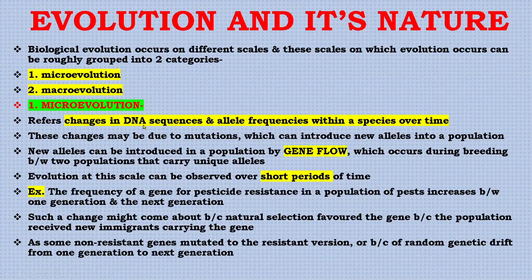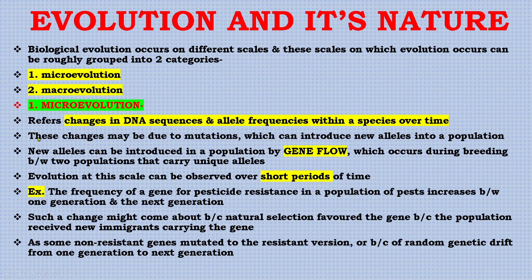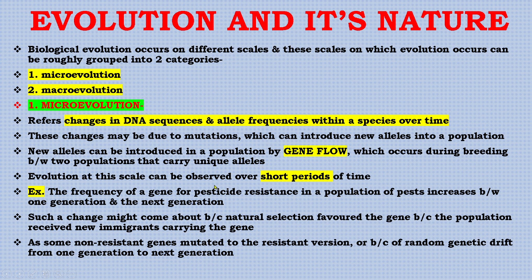Micro-evolution refers to changes in DNA sequences and allele frequencies within a species over time. These changes may be due to mutations, which can introduce new alleles into a population. New alleles can also be introduced by gene flow, which occurs during breeding between two populations that carry unique alleles.